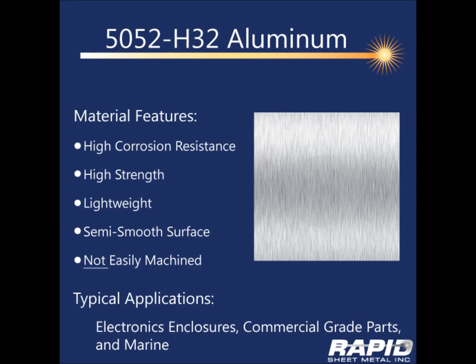The aluminum alloy most commonly used by sheet metal fabricators is 5052H32. It has the best welding characteristics of all the aluminums and has excellent finishing qualities. 5052H32 forms well because it has a high modulus of elasticity. This same characteristic makes it a bad choice for machining because it tends to gall up the end mill.